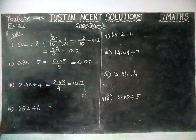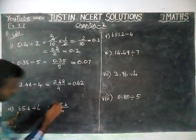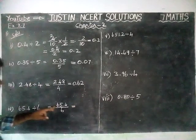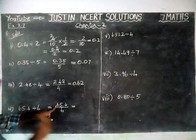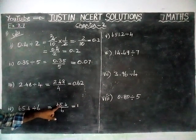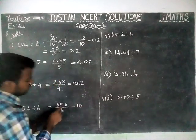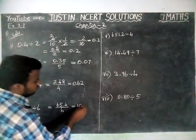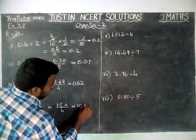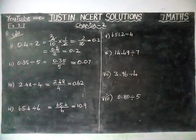Fourth question: 65.4 divided by 6. In 6, we can divide: 1 six is 6. Next digit 5 cannot be divided by 6, so we add 0 and take the decimal point. Now we have 54: 9 sixes are 54. The answer is 10.9.